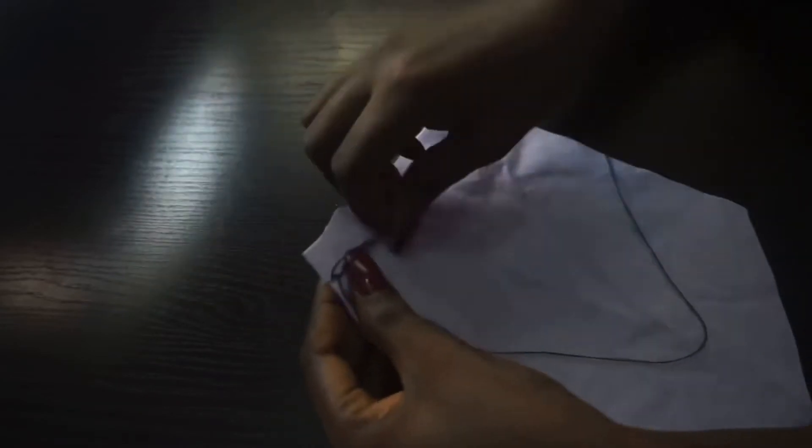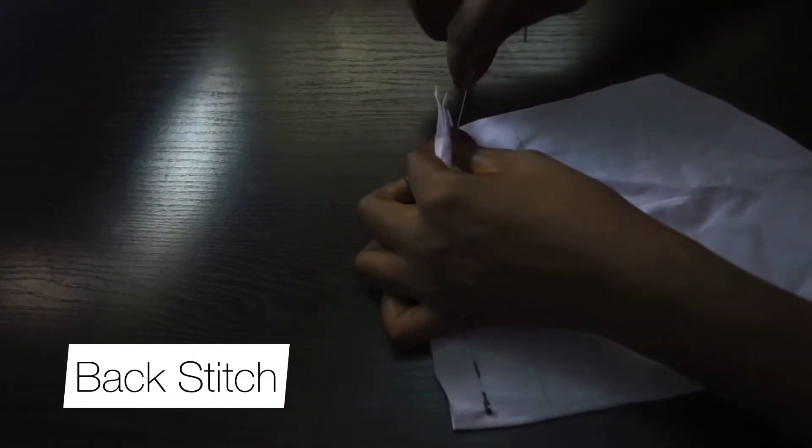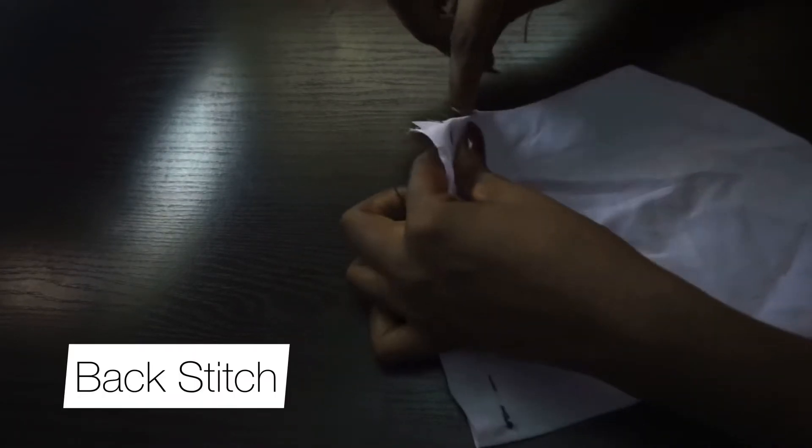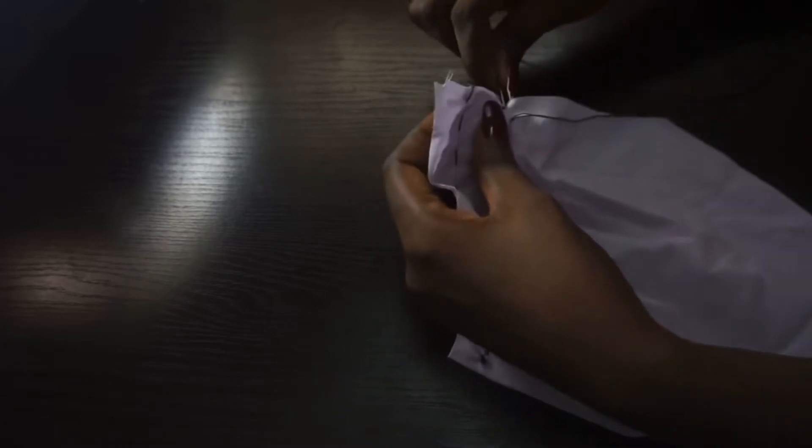Now the next one is the back stitch. This is for more serious projects. You need to join two fabrics together. This is your go-to stitch for those of you that do not have a sewing machine but you want to start doing little projects.